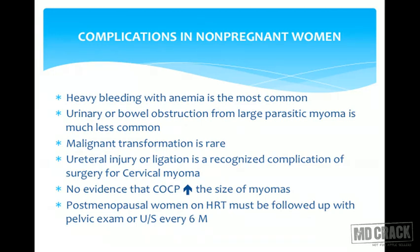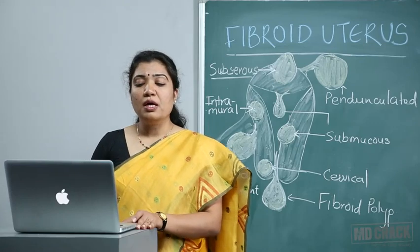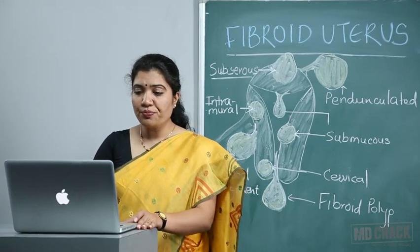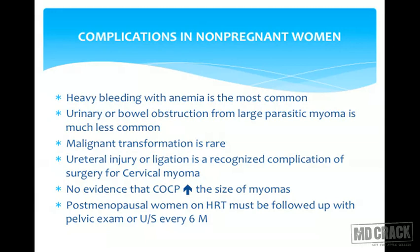Complications in non-pregnant women: heavy bleeding leading to anemia, or urinary and bowel obstruction because of a large tumor. Malignant transformation is quite rare. Ureteral injury or ligation is a recognized complication of surgery for cervical myoma. There is no evidence that combined oral pills increase the size of myoma, but still they are not recommended as treatment. Postmenopausal women on HRT must be followed up with pelvic examination and ultrasound every six months.